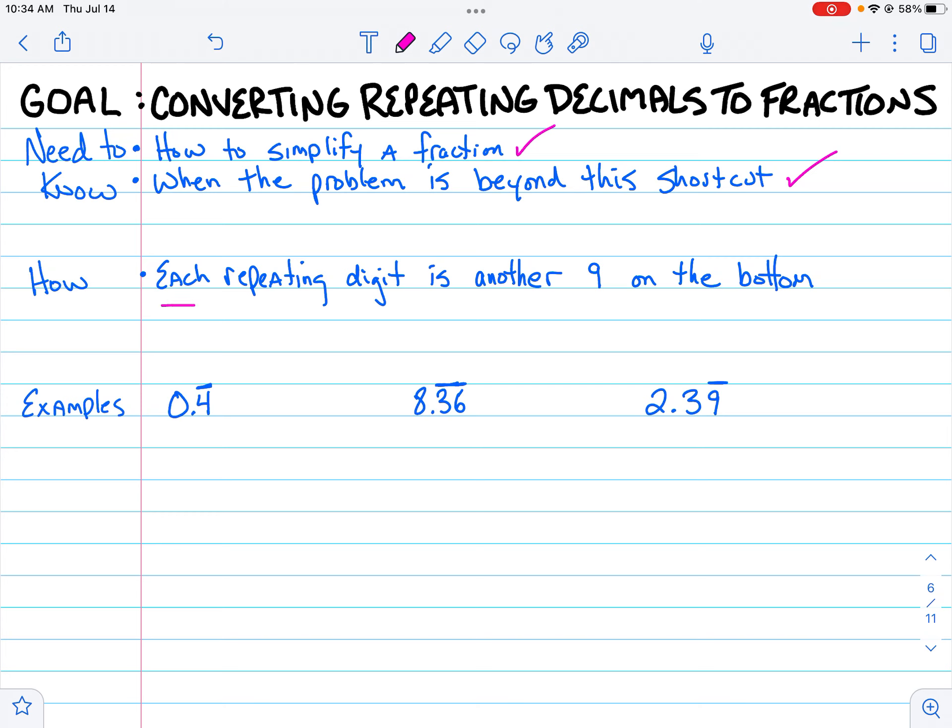How do we do this? You count up the number of repeating digits and every repeating digit gets another 9 in the bottom or in the denominator.